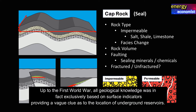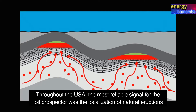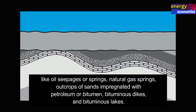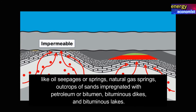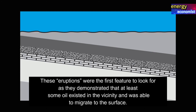Up to the First World War, all geological knowledge was in fact exclusively based on surface indicators, providing vague clues as to the location of underground reservoirs. Throughout that era, the most reliable signal for the oil prospector was the localization of natural eruptions like oil seepages or springs, natural gas springs, outcrops of sands impregnated with petroleum or bitumen, bituminous dikes, and bituminous lakes. These eruptions were the first features to look for, as they demonstrated that at least some oil existed in the vicinity